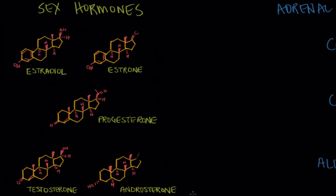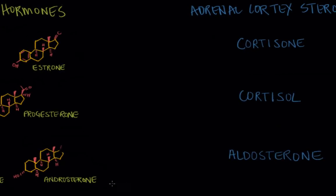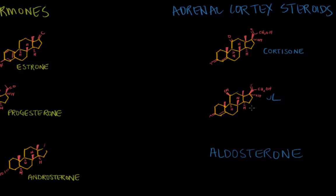And then moving over to the adrenal cortex steroids we had cortisone and cortisol. And those are the body's stress hormones. And so they have a lot of effects from anti-inflammatory to increasing carbohydrate metabolism. And then we also have aldosterone.